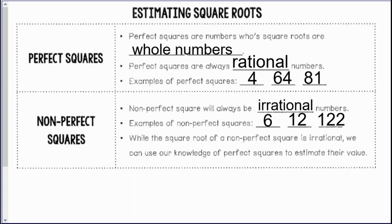Some examples of perfect squares would be 4, because the square root of 4 is 2; 64, because the square root of 64 is 8; and 81, because the square root of 81 is 9.